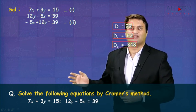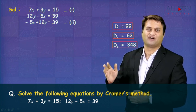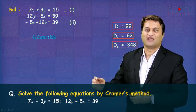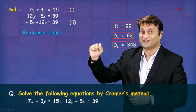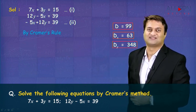We get D as 99, DX as 63, DY as 348. Now, it is time for us to apply Kramer's rule. So you need to write by Kramer's rule. Let us find the value of X and Y.